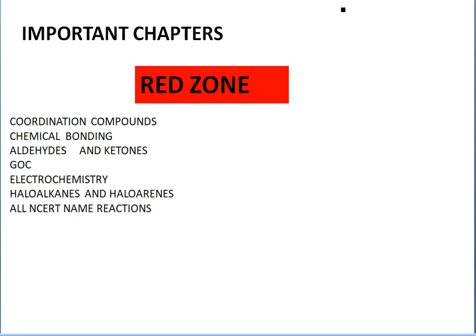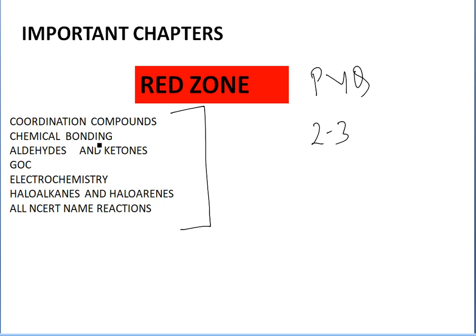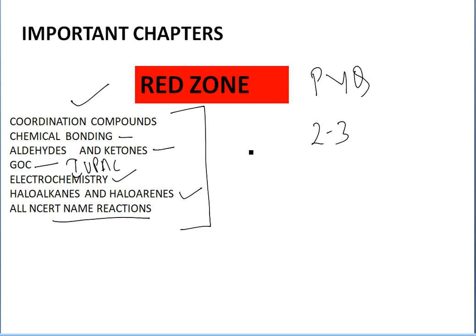Now let's see the most important chapters where you have to concentrate more in the NEET exam. These chapters are the most important — two or three questions regularly come from these topics in previous year questions. Don't try to escape these topics. First is coordination compounds, second is chemical bonding with IUPAC basics, next is electrochemistry, haloalkanes, haloarenes, and all NCERT name reactions. Guaranteed questions will come from these topics — these are the scoring subjects.